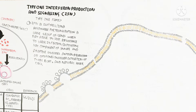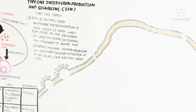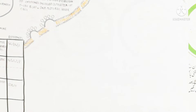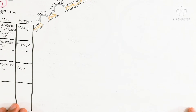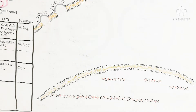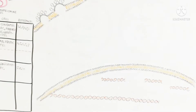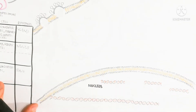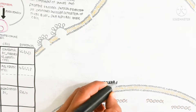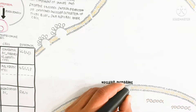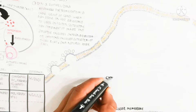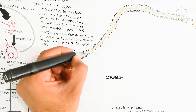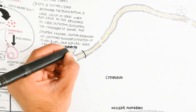Now I am drawing the bigger picture of the cytoplasm. Here is the nucleus, which contains a bilayer nuclear membrane of phospholipids, with DNA as genetic material inside that will be expressed. The cytoplasm surrounds the nucleus, and this is the plasma membrane.